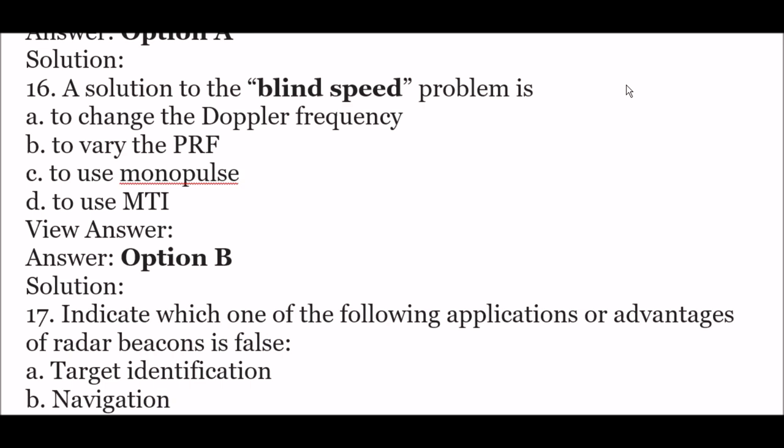Next question: a solution to the blind speed problem is — option A: to change the Doppler frequency, option B: to vary the PRF, option C: to use monopulse, option D: to use MTI. The right answer is option B — to vary the PRF. A solution to the blind speed problem is to vary the PRF.